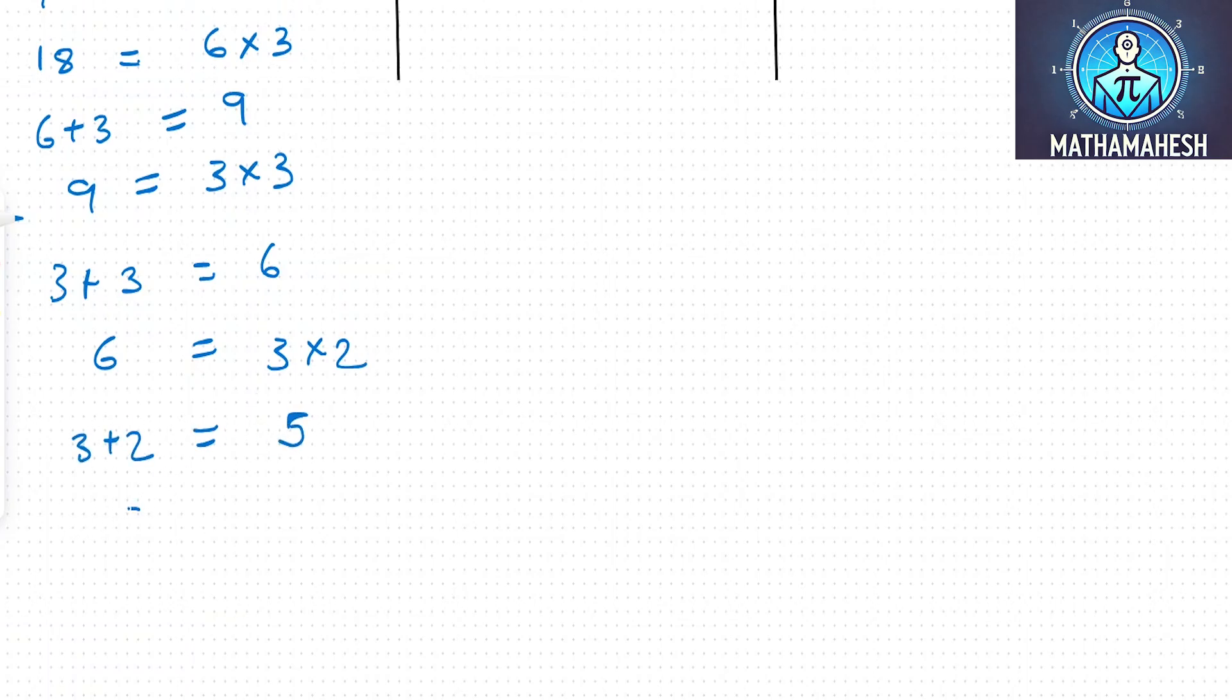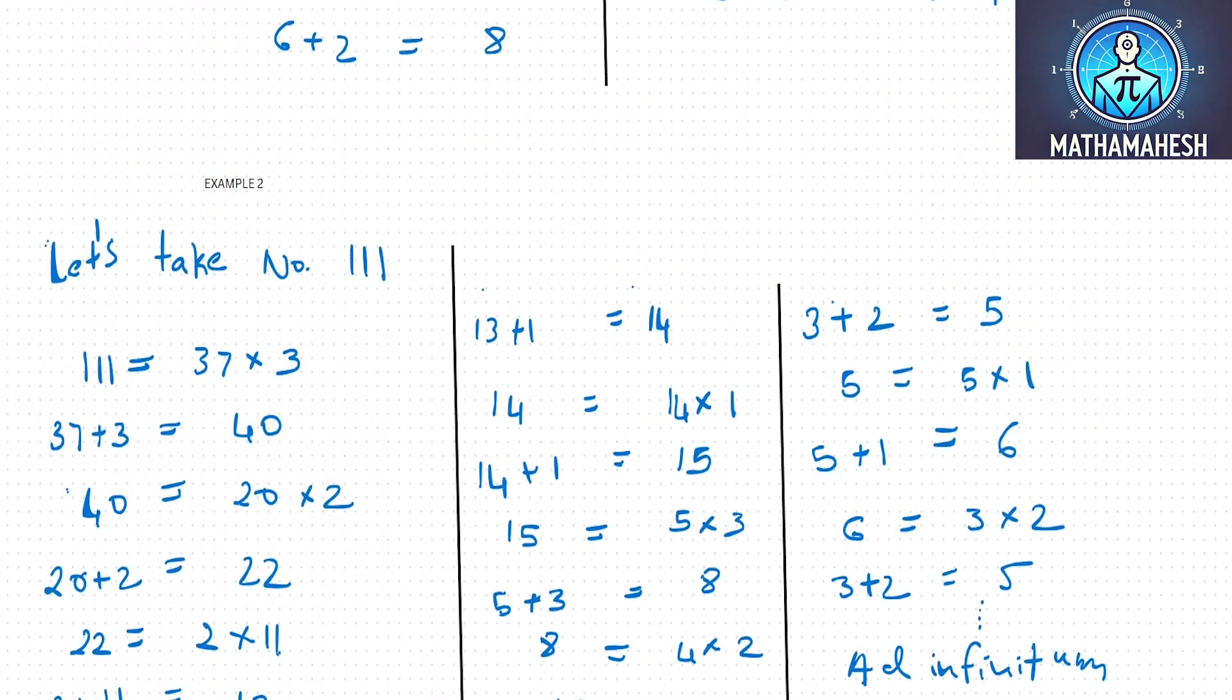Now viewers can see my point that we always end up with 5 and 6 if we apply these steps. I've been able to check at least 100 numbers and all of them end up at 5 and 6. Maybe the viewers can find a number which doesn't follow this pattern. Thank you very much.